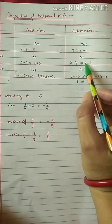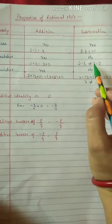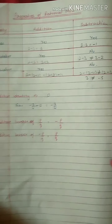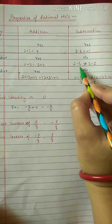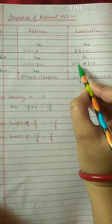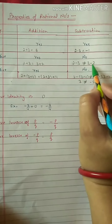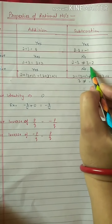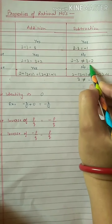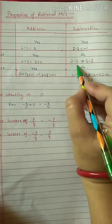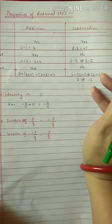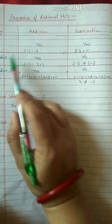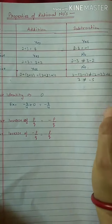Second property, commutative: we change the order and check. If we subtract 2 minus 3, the answer is minus 1. If we do 3 minus 2, the answer is 1 — different. So in subtraction, if we change the order the answer changes, meaning commutative property is not applicable for subtraction.